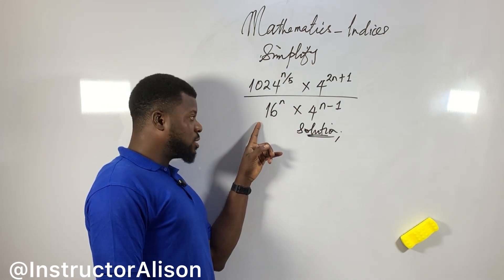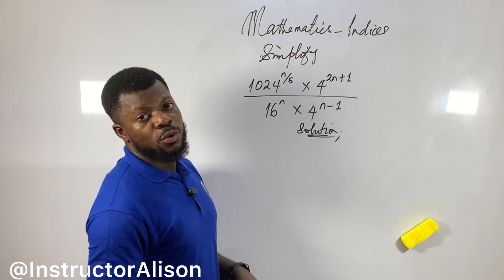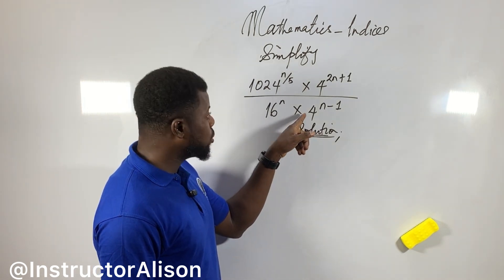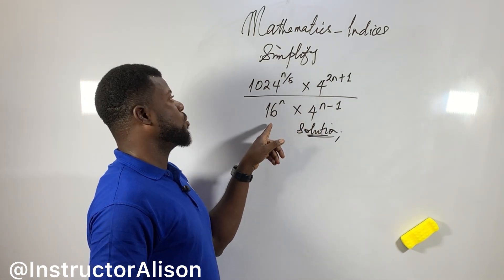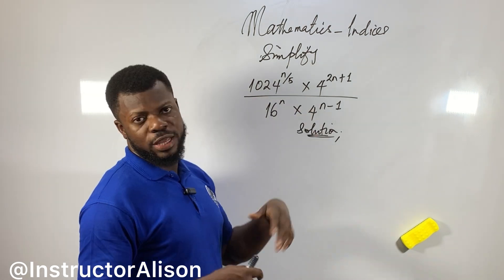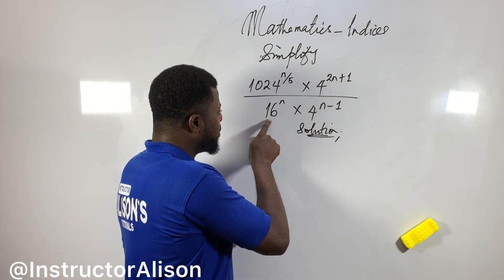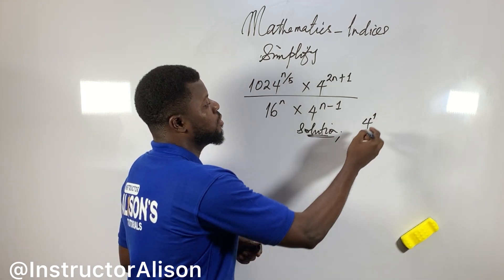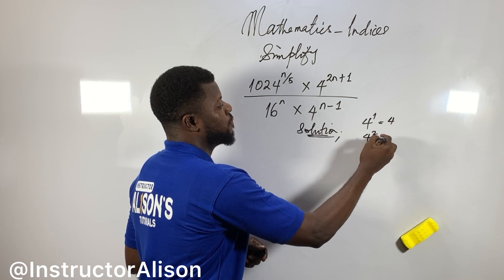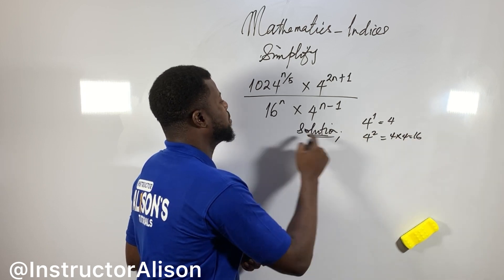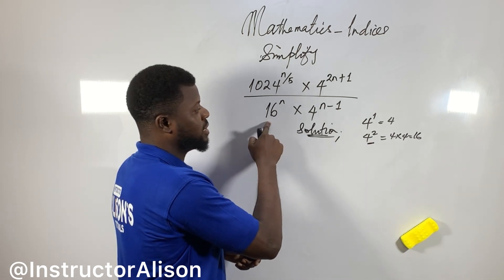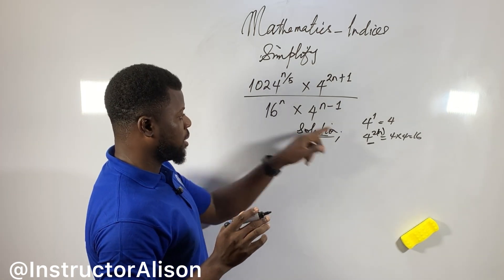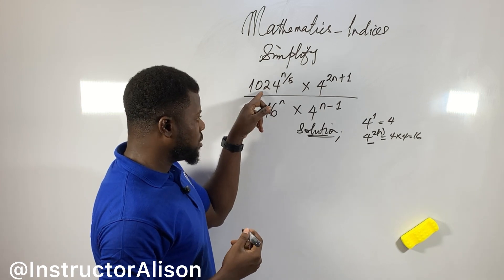My suggestion is to get the base of 4 for everything. Notice that 4 to the power of 2 will give us 16. Ask yourself: 4 to the power of what gives you 16? 4 to the power of 1 is 4. 4 to the power of 2 is 4 times 4, which is 16. So 4 squared replaces 16. Now for 1024, let me try: 4^3 = 64, 4^4 = 256, 4^5 = 4×4×4×4×4 = 1024. So 1024 = 4 to the power of 5.